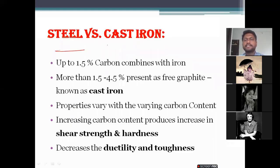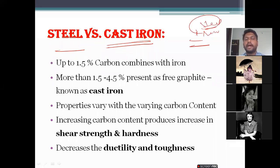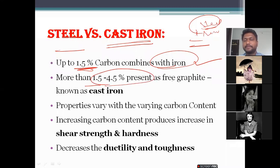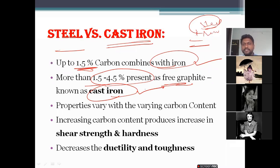Steel versus cast iron — most people don't know that iron is different and steel is different. Up to 1.5 percent carbon combines with iron to form steel. When more than 1.5 to 4.5 percent carbon is present as free graphite, it is known as cast iron. So when carbon is 1.5 to 4.5 percent, we definitely call it cast iron.